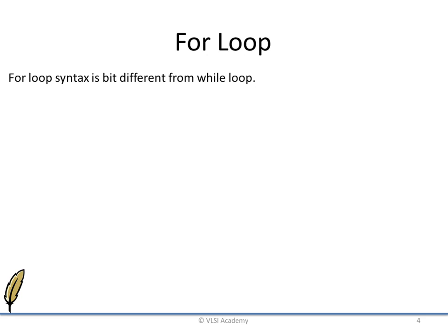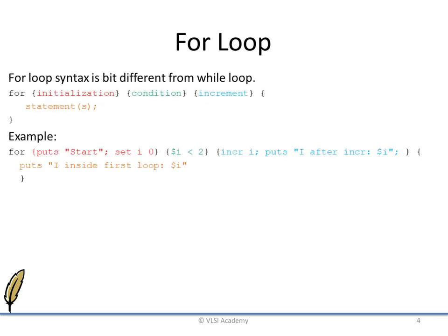Now let us move to the for loop. The syntax is as follows, which is very similar to what we follow in C. In this example all the statements are color coded, and all three elements of the for loop are put in separate curly braces. The initialization statement corresponds to setting the initial value of i to 0. The conditional statement allows the loop to run until the value of i is lesser than 2. The increment element will increment the value of i after each execution of the loop.